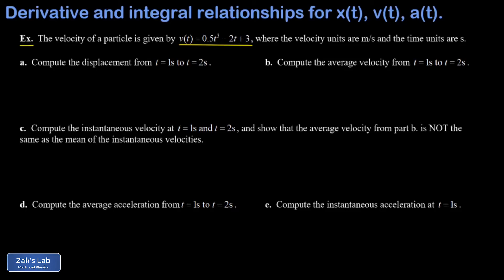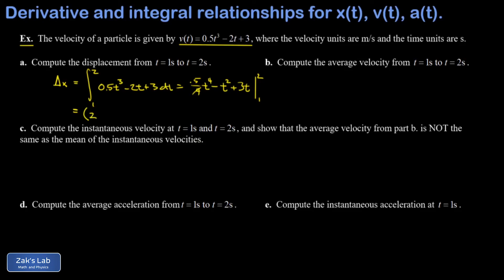In part a, we're asked to compute the displacement from t equals one to t equals two seconds. That's an integral of the velocity function from one to two — the area bounded by the velocity function on that interval. Applying the power rule: 0.5t³ integrates to (0.5/4)t⁴, negative 2t integrates to negative t², and 3 integrates to 3t. Evaluating from one to two: substituting the upper limit gives 0.5 times four minus four plus six; substituting the lower limit gives 0.125 minus one plus three. The total displacement is 1.875 meters.